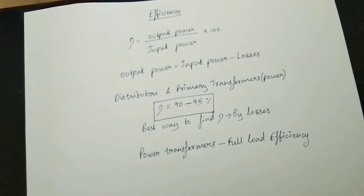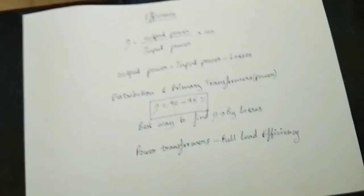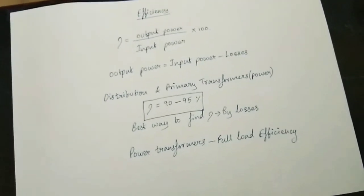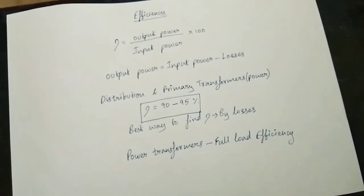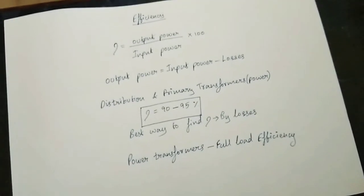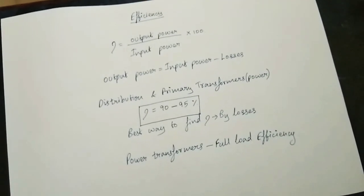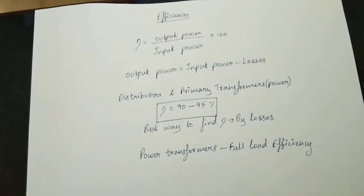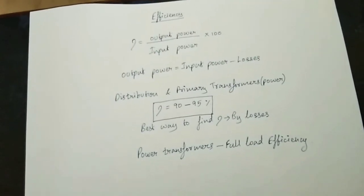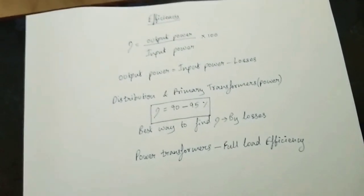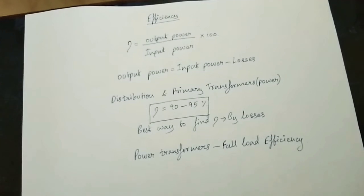The power transformer operates at full load efficiency. It is generated at the generating station. The load is very low because we always have to transmit power to the consumer. We can't manage the load on the distribution side, so the power transformer acts as a distribution transformer.